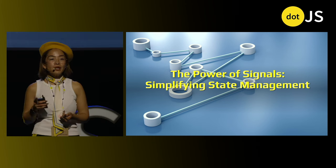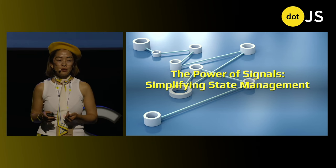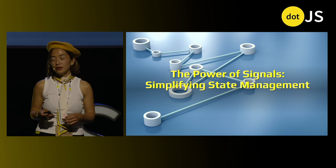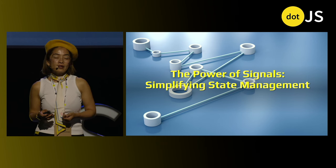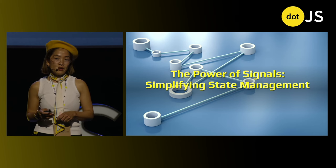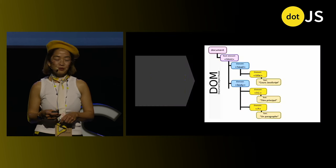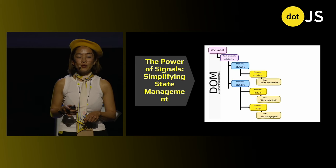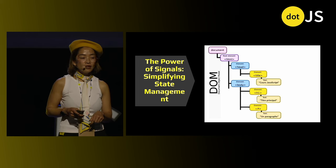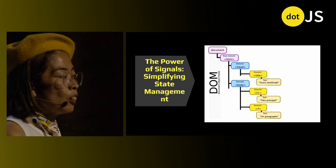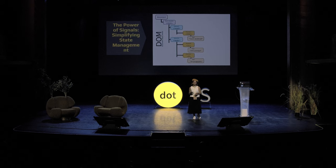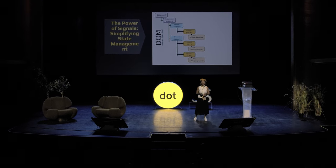Signals simplify state management by making it more intuitive and predictable. Instead of dealing with complex state management libraries or intricate data flows, signals allow us to focus on what matters most: application logic and user experience. Moreover, signals enhance performance by updating only the parts of the DOM that need to change, minimizing unnecessary re-renders and optimizing resource usage. This efficiency is crucial in building responsive and fast web applications.